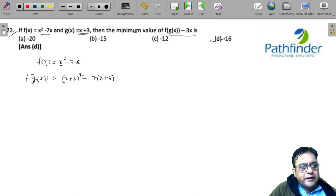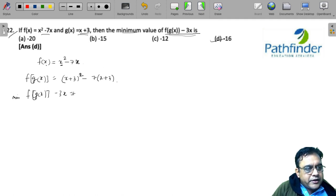And you have to find the minimum value of f(g(x)) - 3x. So let's do that. (x + 3)² - 7(x + 3) and minus 3x. So what do you get? x² + 9 + 6x - 7x - 21 - 3x. So you've got to find the minimum value of this.